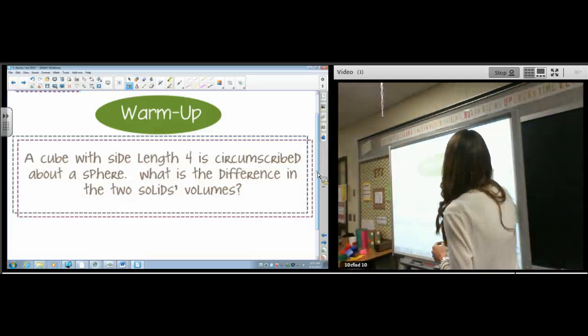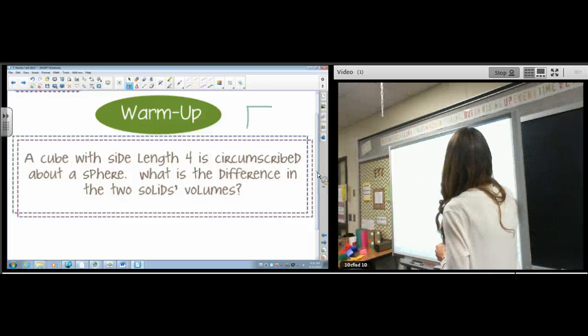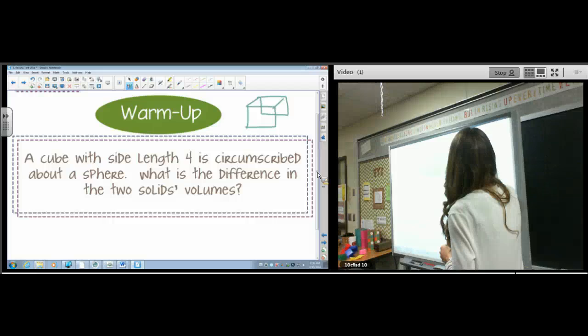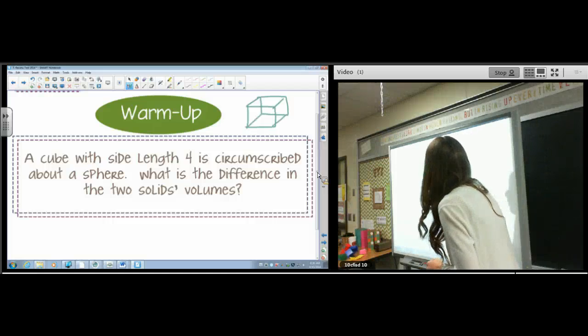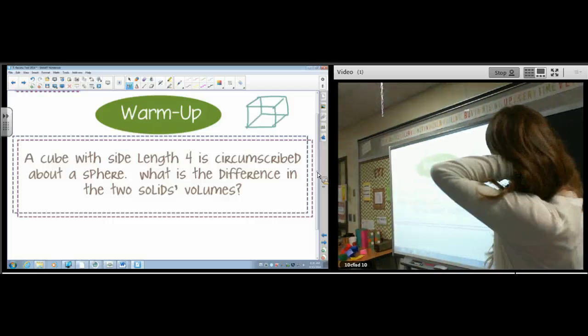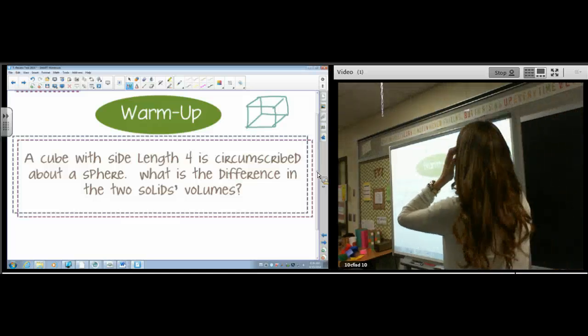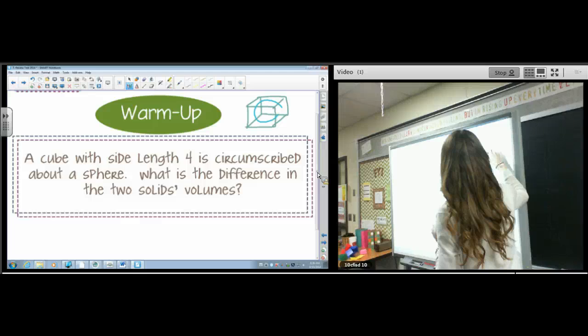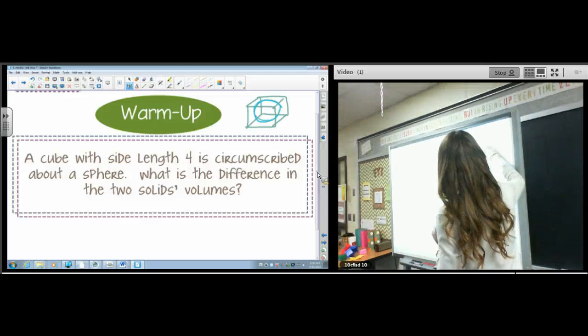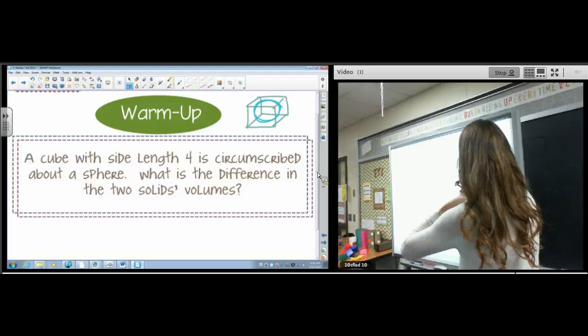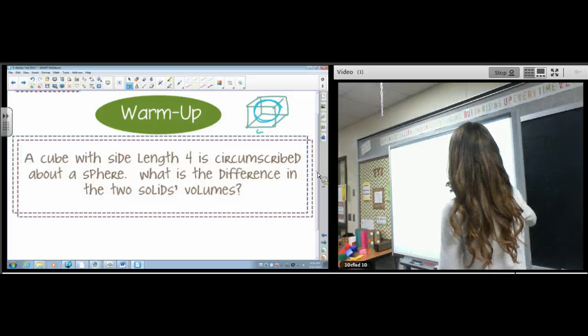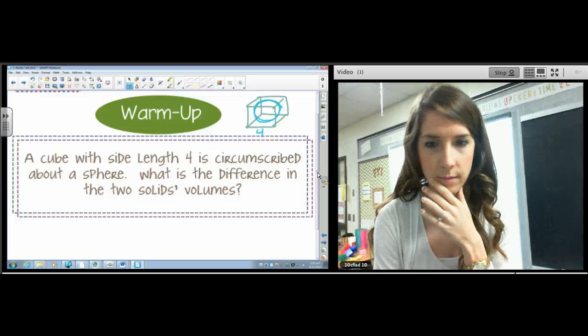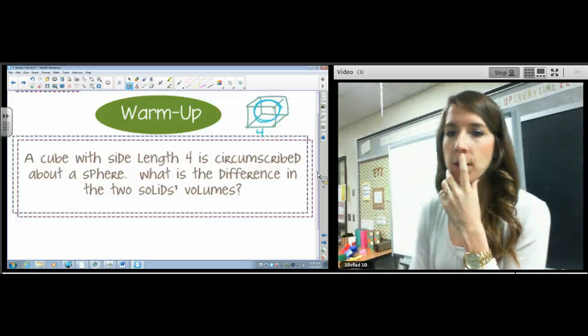All right, let's do the warm-up. We've got a cube with side length 4, and I'm not going to be very good at drawing this picture, but I'm going to try my very hardest. That cube is circumscribed about a sphere. So we've got a sphere in there, and the sphere is going to be tangent to the cube at all parts. This is 4, and therefore the diameter of the sphere would also be 4, by the way.